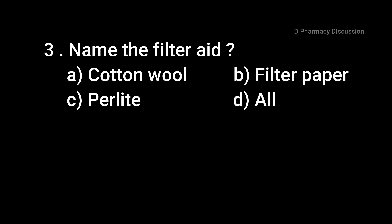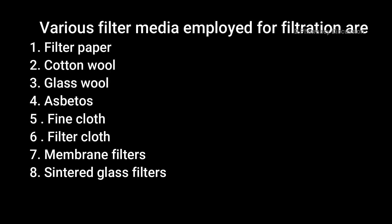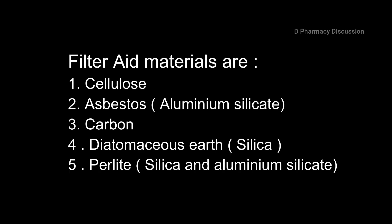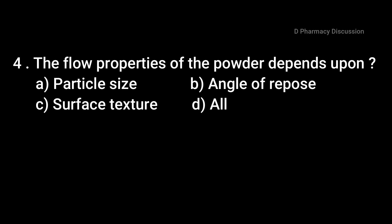Question 3: Name the filter aid. Option A: cotton wool, B: filter paper, C: perlite, and Option D: all. Correct answer is Option C, perlite. The various filter media employed for filtration are filter paper, cotton wool, glass wool, asbestos, fine cloth, filter cloth, membrane filters, and sintered glass filters. The filter aid materials are cellulose, asbestos (aluminium silicate), carbon, diatomaceous earth (silica), and perlite (silica and aluminium silicate).